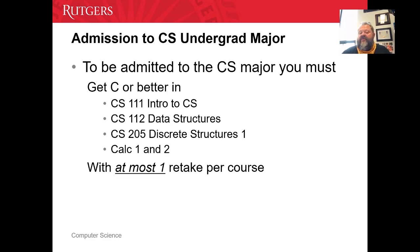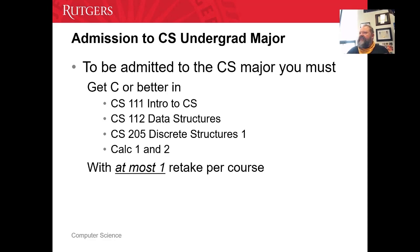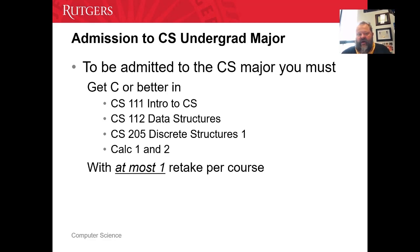Different situation for transfer students coming in from a New Jersey community college or another four-year school. Even if you say, 'I have intro, I have data structures, I have both my calculus,' you can't declare right away. We require that you take at least three courses in our department before you can declare as a computer science major. Here, the subject code for CS classes is 198, so you'll hear people say you need to take three 198 courses.